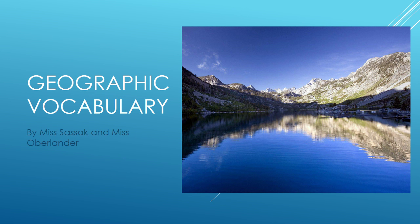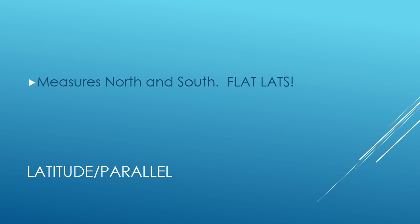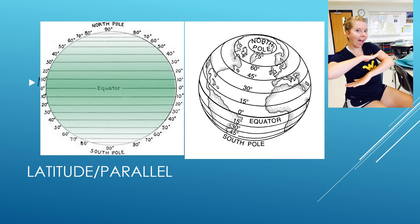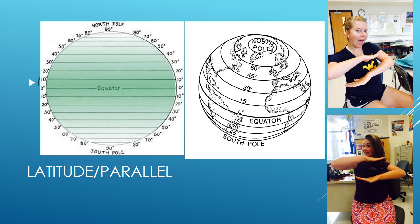You are also going to be drawing pictures to go along with your notes. Our first word is latitude, or parallel. It is an imaginary line that runs around the globe and measures north and south. A way you can remember it is 'flat lats' because the lines are flat on the globe. The parallel or latitude that runs in the middle of the earth is the equator.